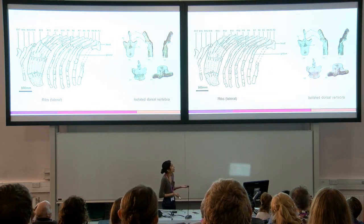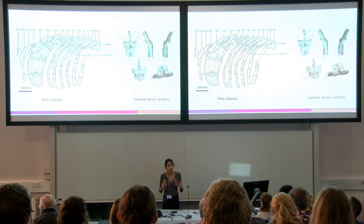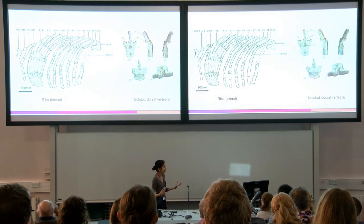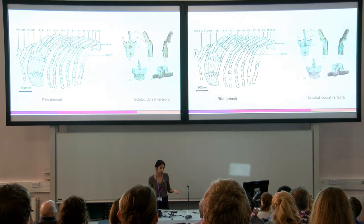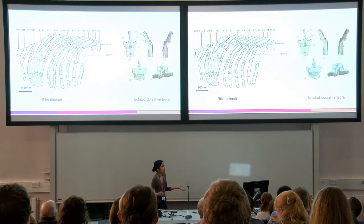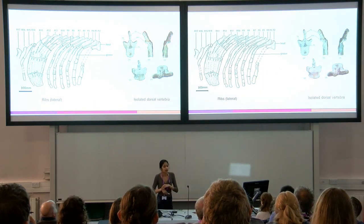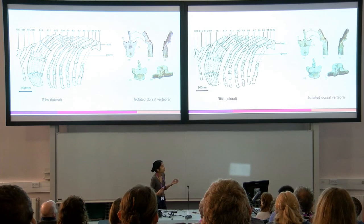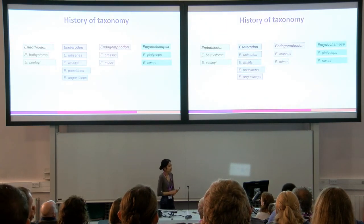The ribs were preserved in a certain curvature, which could indicate something about body size and body shape in life — most dicynodonts would have had a barrel-shaped body. One of the vertebrae on the vertebral column was disarticulated from the rest and was very well preserved, so using photogrammetry I was able to look at it in all dimensions, describe it in detail, and determine the morphology of the rest of the dorsal series.